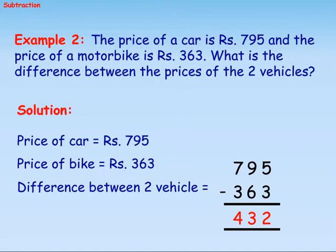Example 2: The price of a car is 795 rupees and the price of a motorbike is 363 rupees. What is the difference between the prices of the two vehicles? Solution: The price of a car equals 795 rupees. Price of a bike equals 363 rupees. Difference between two vehicles equals 795 minus 363 equals 432 rupees.